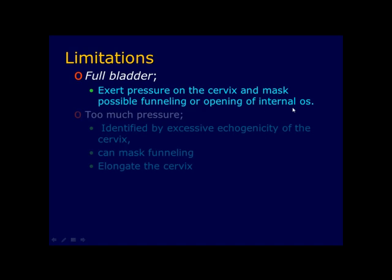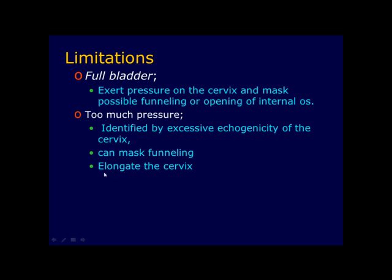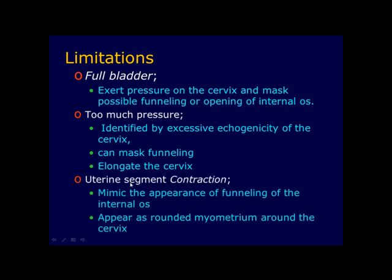Too much pressure by the examiner — identifiable by excessive echogenicity of the cervix — can also mask funneling and elongate the cervix. Additionally, lower uterine segment contractions might mimic the appearance of funneling of the internal os. On ultrasound, a contraction will appear as rounded myometrium around the cervix, with a normal cervix distal to the contraction.